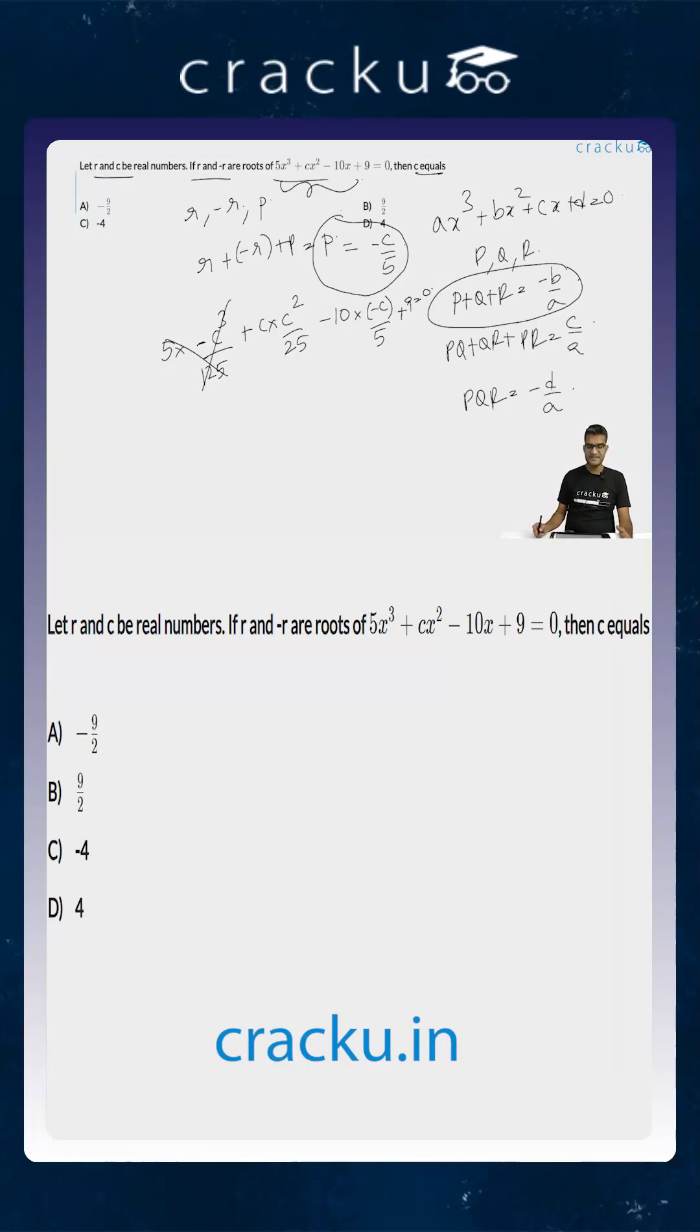This is -C³/25, and this is C³/25. So let us cancel both of them, and we are left with 2C + 9 = 0, or C = -9/2. So the value of C is option A, which is -9/2.